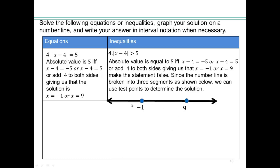Now what? Look at the number line. There is part below negative 1, between negative 1 and 9, and above 9. OK, so now we have to just take test points and check which solutions are going to work.